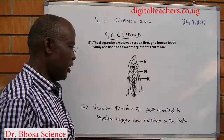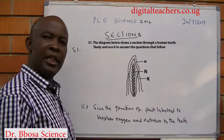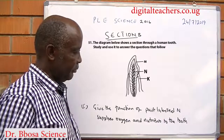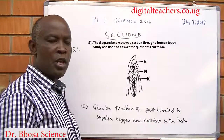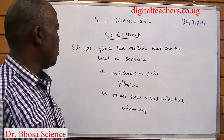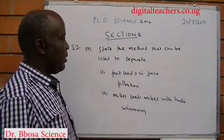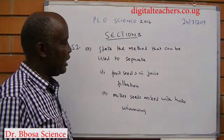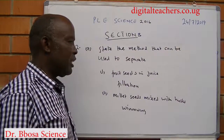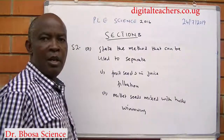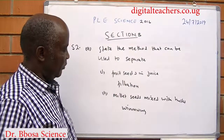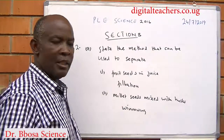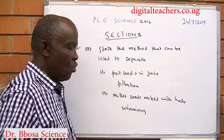Give the function of the part labeled N: it supplies oxygen and nutrients to the tooth. Number 52: state the method that can be used to separate: one, fruit seeds in juice — by filtration; two, millet seeds mixed with husks — by winnowing.